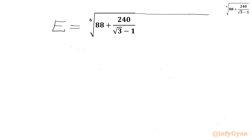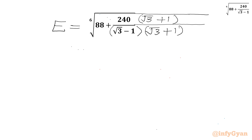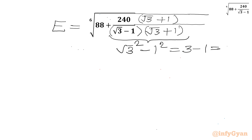Now we will use rationalization of the denominator. We need to multiply (√3 + 1) in the numerator and denominator. We are having a specific algebraic form in the denominator: (A − B)(A + B), which gives A² − B² = 3 − 1 = 2. So the denominator is 2.